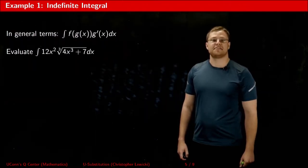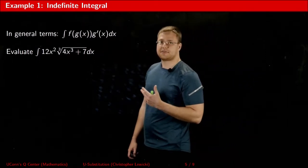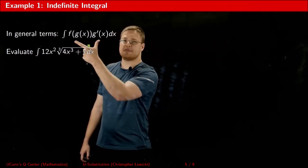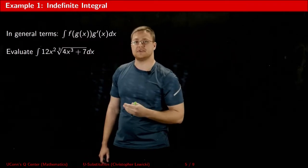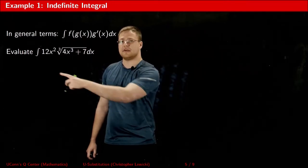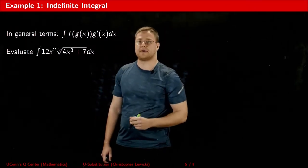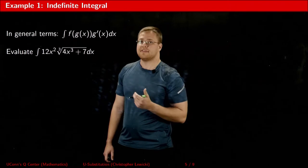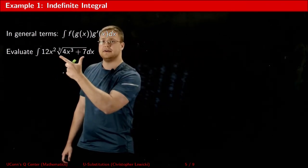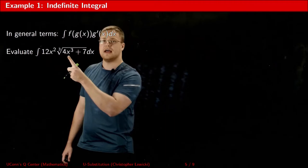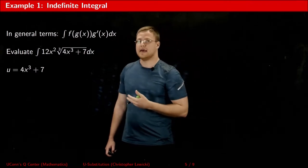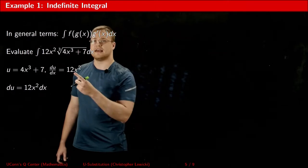Now that you've seen where the u-substitution method comes from, let's work through an example. You're allowed to use u-substitution if you can get your given integral to look like the result of applying the chain rule. The first question is: do I have somewhere in my expression a function with an outside part and an inside part? If yes, set the inside part equal to u. Here the cube root is the outside part and 4x cubed plus 7 is the inside part, so I set u equal to 4x cubed plus 7, meaning du/dx equals 12x squared.